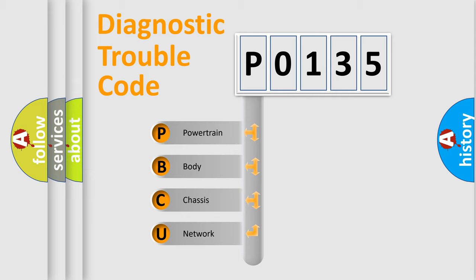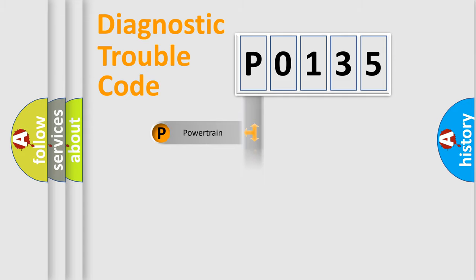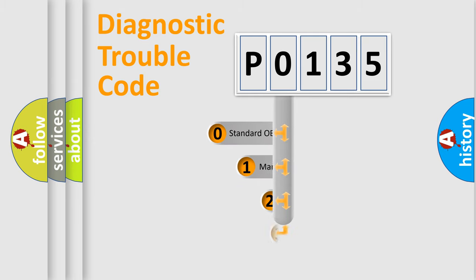We divide the electric system of an automobile into four basic units: Powertrain, Body, Chassis, and Network. This distribution is defined in the first character of the code.